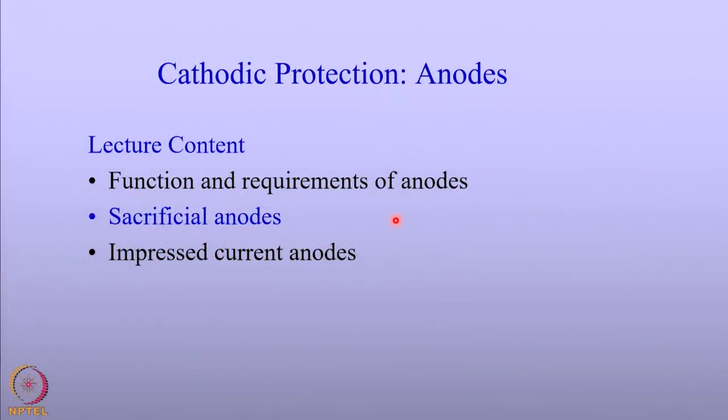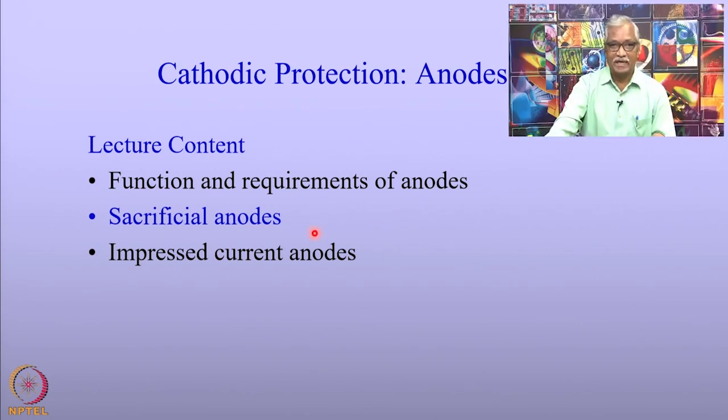Welcome to the lectures on cathodic protection engineering. In the lecture on anode ground bed, we discussed the relation between soil resistivity, anode dimension, and the ground bed resistance offered for cathodic protection of engineering structures. It is important to understand how the anodes perform in order to have better anodes for cathodic protection. In this lecture, we will discuss these aspects, starting with the function and requirements of anodes, then sacrificial anode performance, and a brief discussion on impressed current anodes.